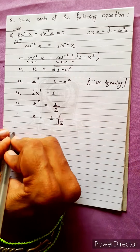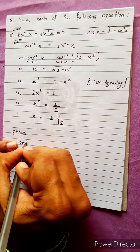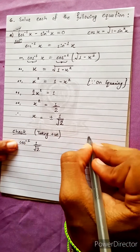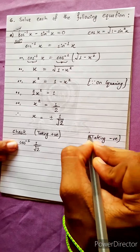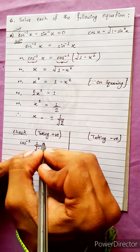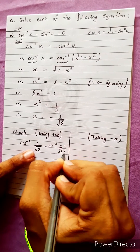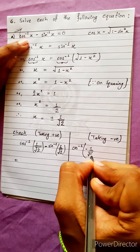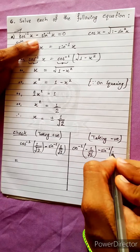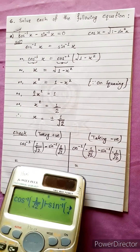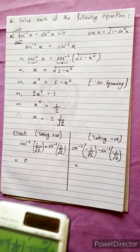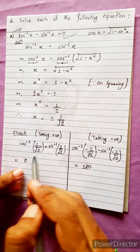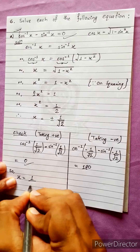We will have to test both values of x. Taking positive: cos inverse of 1 by under root 2 equals sin inverse of 1 by under root 2, which gives 0, satisfying the equation. So x equals 1 by under root 2 is valid.